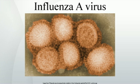Hemagglutinin causes red blood cells to clump together and binds the virus to the infected cell. Neuraminidase is a type of glycoside hydrolase enzyme which helps to move the virus particles through the infected cell and assists in budding from the host cells.